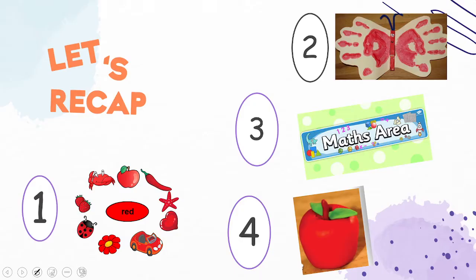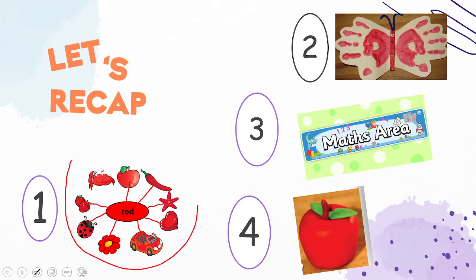In the previous lesson, I pointed out all the red objects in your surrounding. Obviously your red things can be different from my red objects. Let's name them: red apple, red chilli, red starfish, red heart, red car, red flower, red ladybug, red strawberry, and red crab.